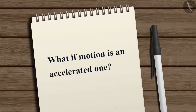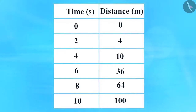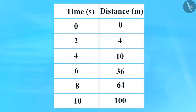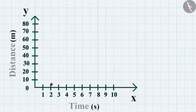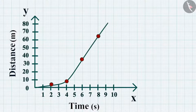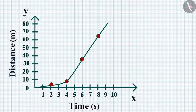What if the motion is accelerated? We can plot a distance-time graph for accelerated motion as well. A table shows the distance covered by a car in each time interval. Once you plot the points, the graph shows a non-linear variation of distance with time, indicating the object moves with non-uniform speed.